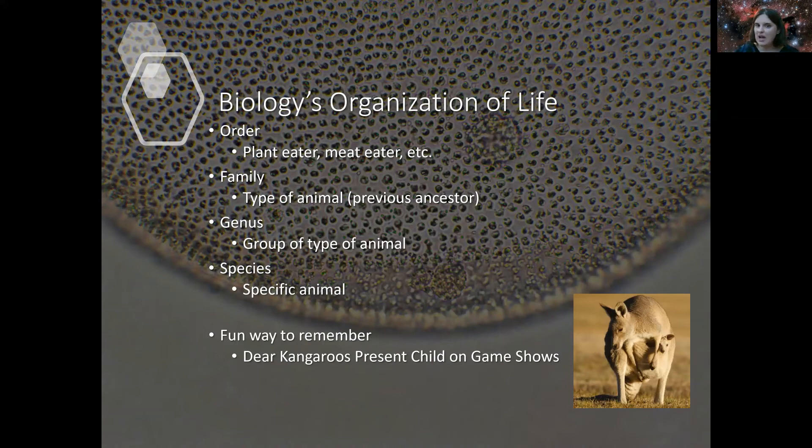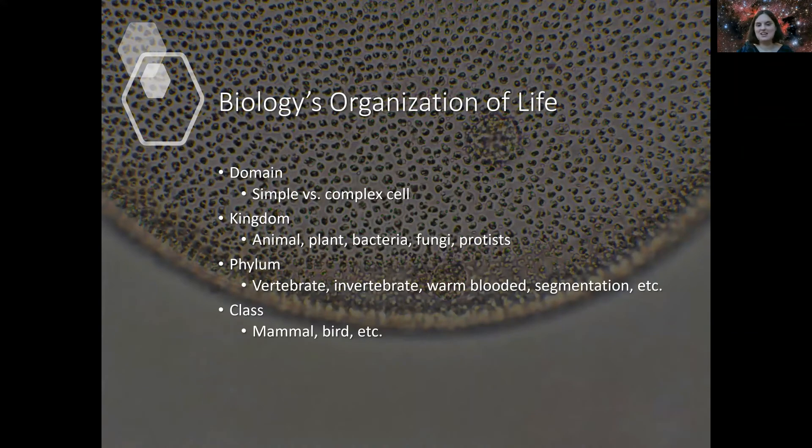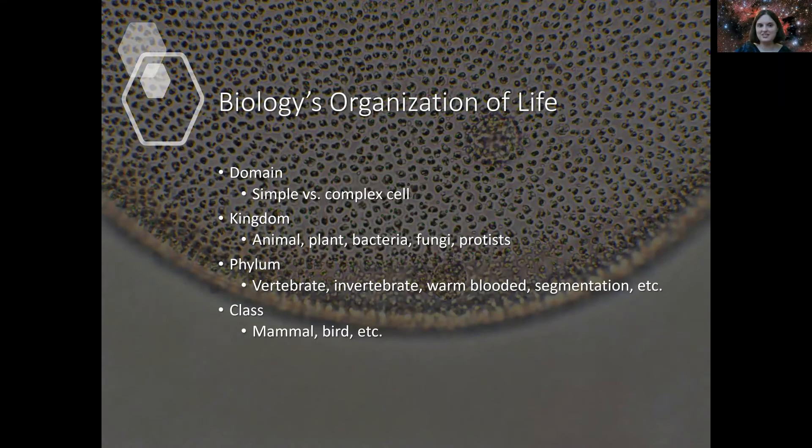So that's the biological tree of life and how it's organized. So a good mnemonic that I sometimes use to be able to remember all the different steps of this family tree is, Dear Kangaroos Present Child on Game Shows, which talks about, again going back, domain, kingdom, phylum, class, order, family, genus, species. So if you remember the mnemonic, that'll help a lot remembering the different steps.